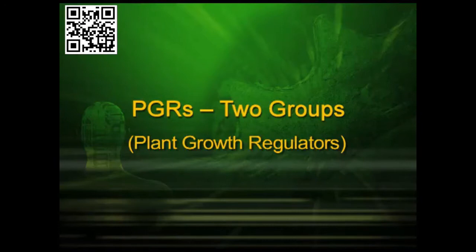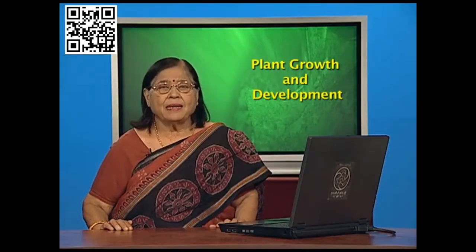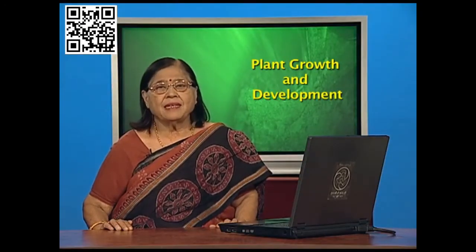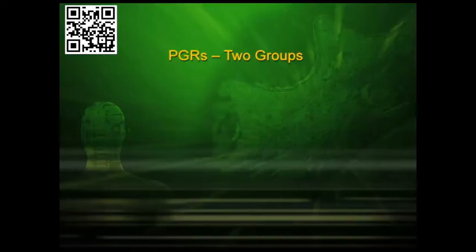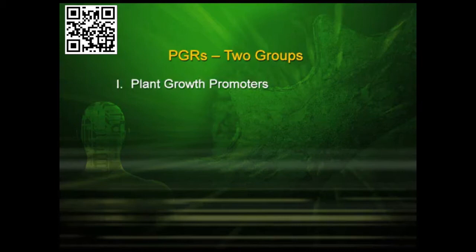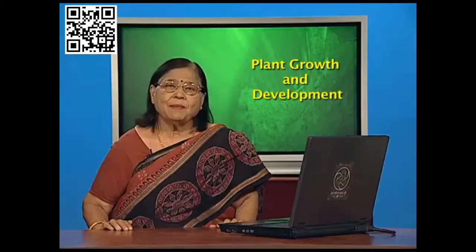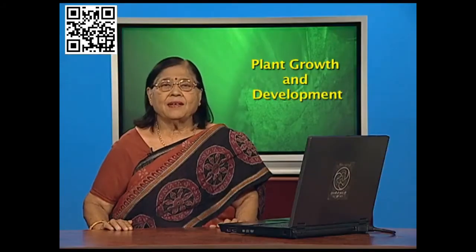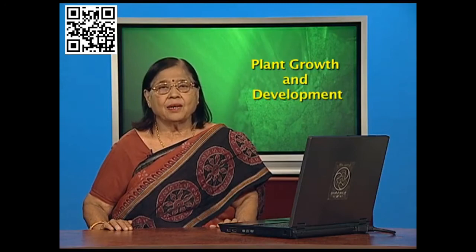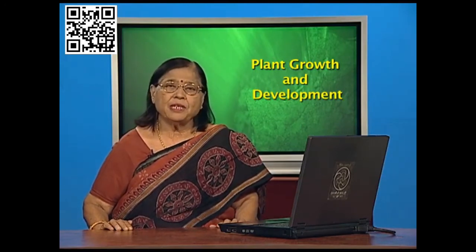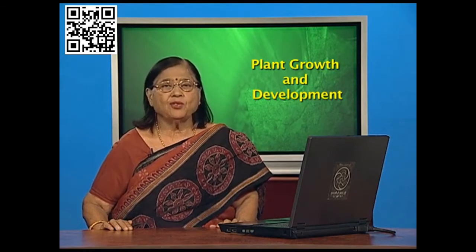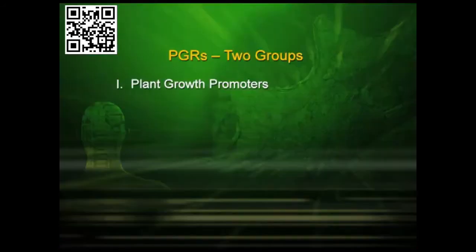PGRs — plant growth regulators — can be put into two groups. The first group will be plant growth promoters: those PGRs which are promoting the growth of the plant somewhere or the other. The plant has so many tissues, so many areas, so many kinds of places where growth is taking place, and these PGRs act as promoters.